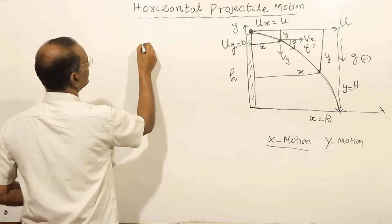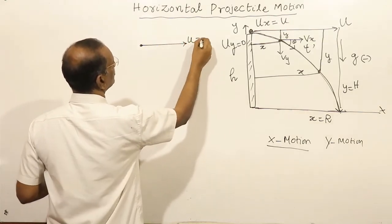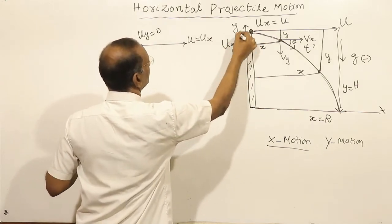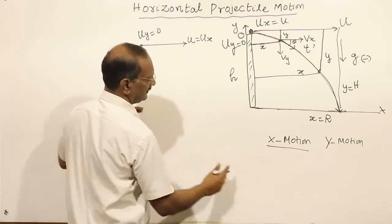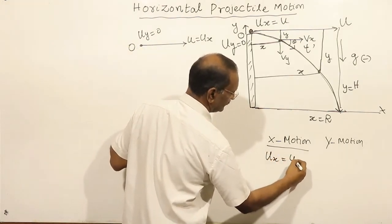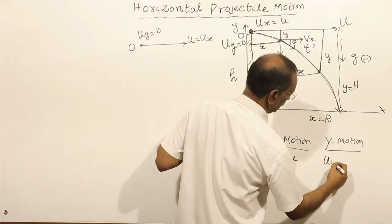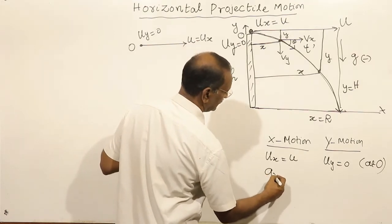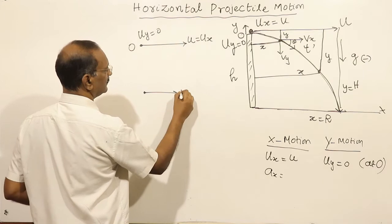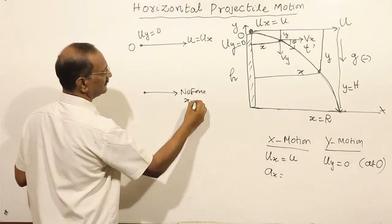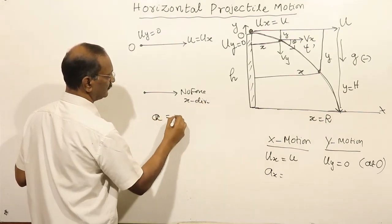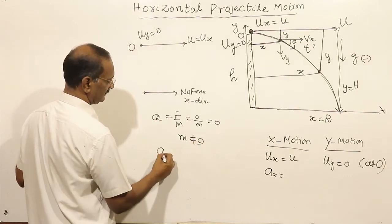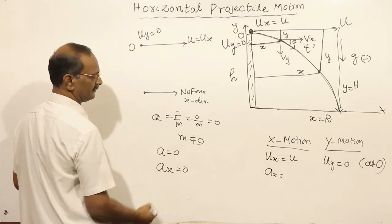Initially at point O, the initial velocity in the x-direction is equal to u, and the initial velocity in the y-direction is equal to 0. Acceleration in the x-direction is equal to 0, since there is no force in the x-direction. By Newton's second law, force equals mass times acceleration; since force is 0 and mass cannot be 0, acceleration in the x-direction is equal to 0.